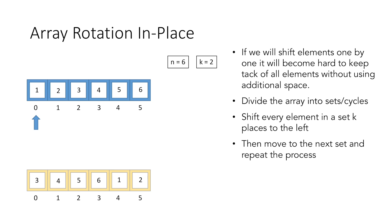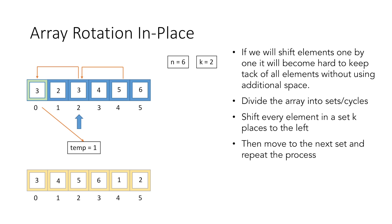We start at index 0 and store the value 1 in a temporary variable temp. We look for the element which should come at index 0, which is 3 — when we shift 3 two positions to the left it comes to index 0. We move element 3 to index 0. Now instead of moving to the next element, we jump directly to index 2, the index of the element we just shifted. The element that should come at index 2 is 5, so we move element 5 to index 2.